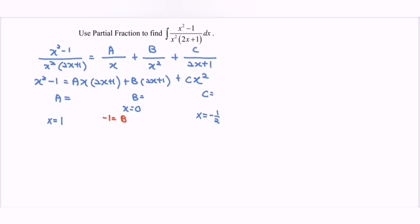Next, focus on C. When x equals negative 1/2, we substitute and the left-hand side will be 1/4 minus 1, so the answer is negative 3/4. For this case we can eliminate A and B, so simply focus on the cx squared term. Substituting x equals negative 1/2 gives c over 4. So C equals negative 3.